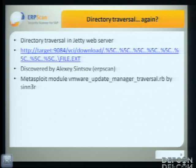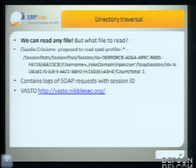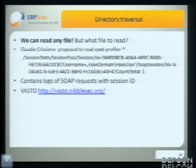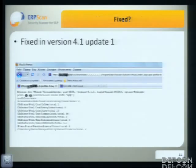There are now Metasploit modules for this directory traversal. So we can read any file, but what file to read? Claudio proposed to read the file vpxd.profile — it's a log file. vCenter uses the SOAP protocol, and this log file contains SOAP requests with session IDs. If we replace our session ID with a session ID from an admin, we can get admin access. He also developed a tool called VASTO, which has a collection of Metasploit modules and a local proxy for this task. Unfortunately, this was also fixed in our version.